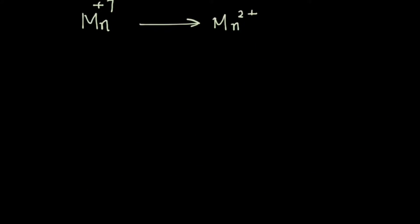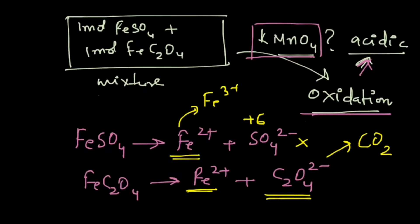Now in the acidic medium, KMnO4 which has Mn in the +7 oxidation state changes to Mn2+, and in that process it takes up 5 electrons. So this is the reaction that we are going to use along with the other species.